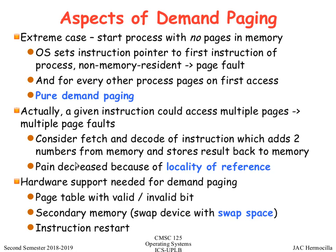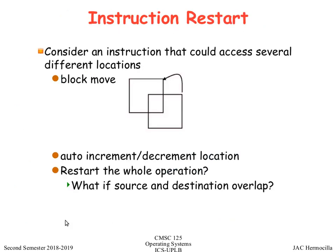Consider an instruction that fetches, decodes, adds two numbers from memory, and stores the result back to memory — that can access multiple pages. The hardware requirements for demand paging are: the valid/invalid bit in the page table, secondary storage (the swap partition on disk), and instruction restart support. These are generally already supported by modern architectures. Some architectures may have problems when instructions access overlapping memory regions, but most modern architectures avoid instructions with multiple memory location accesses.